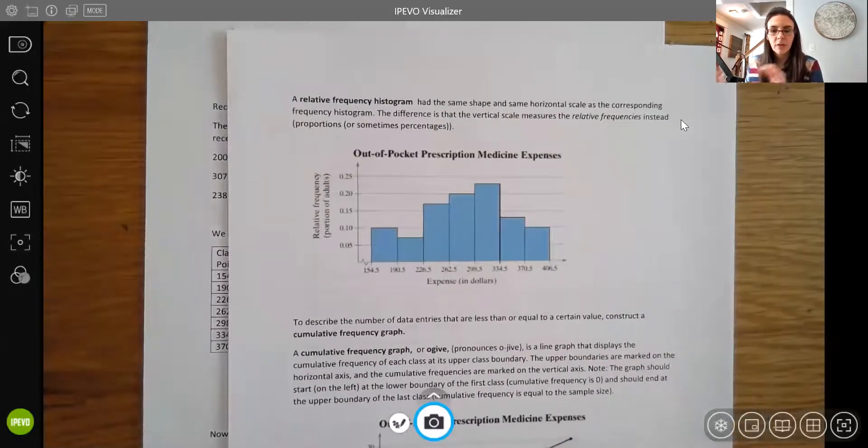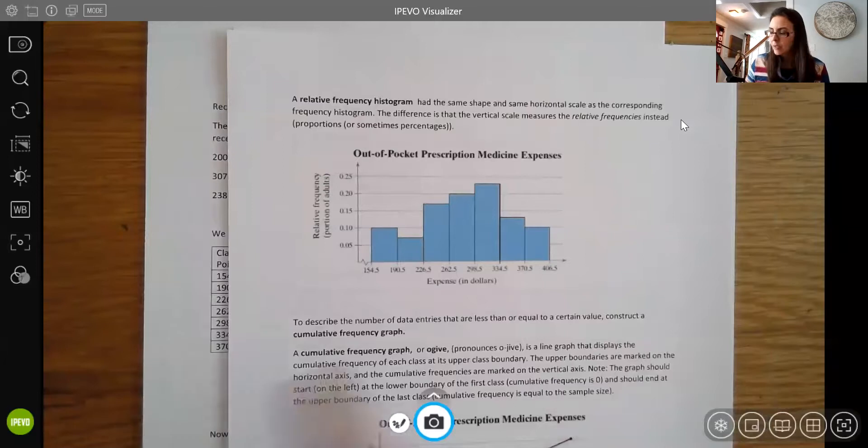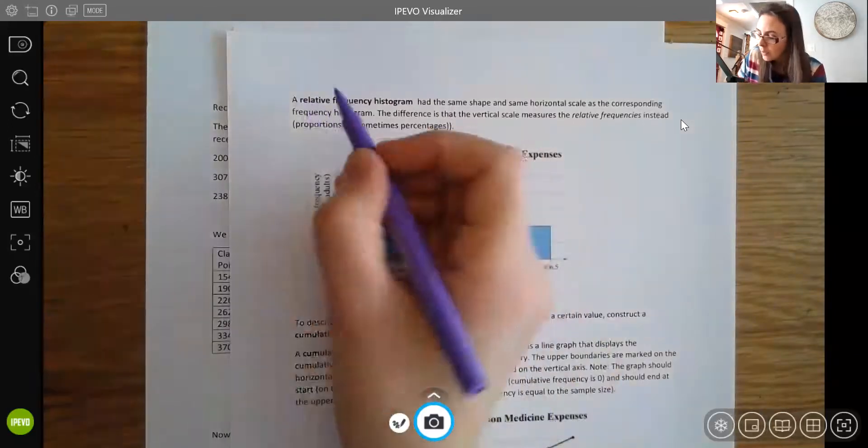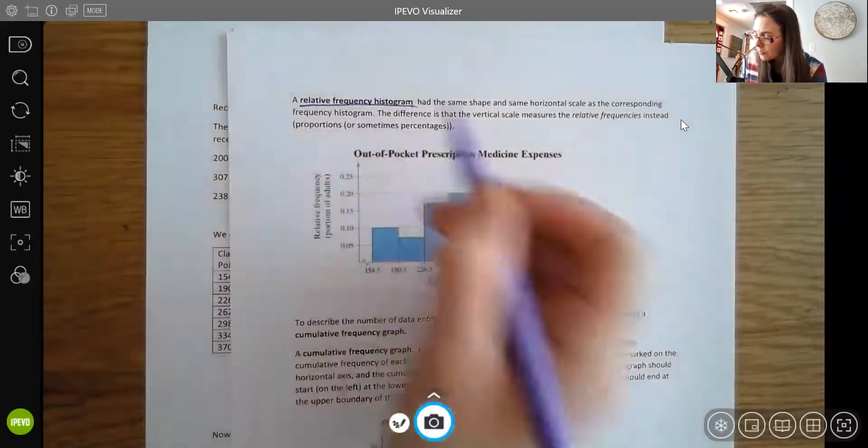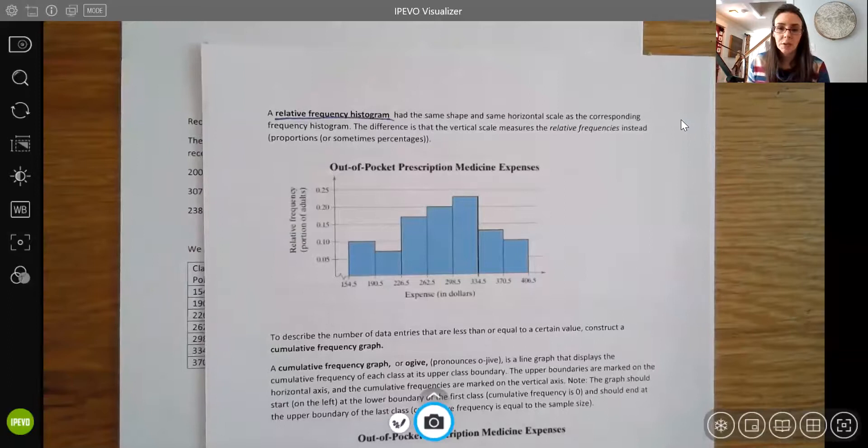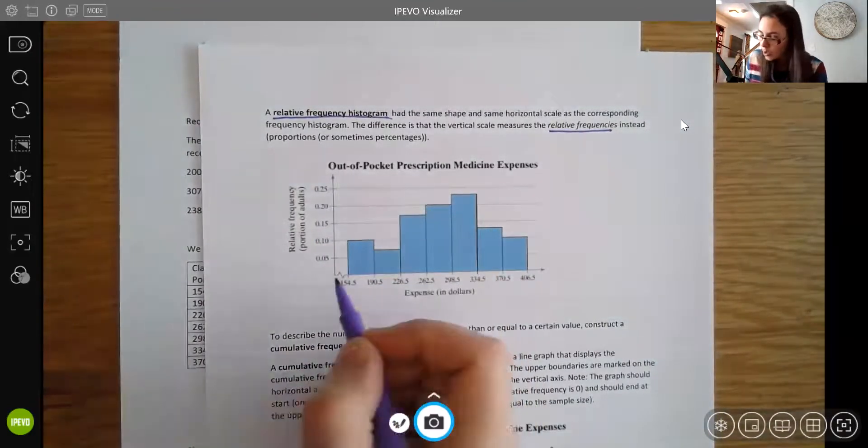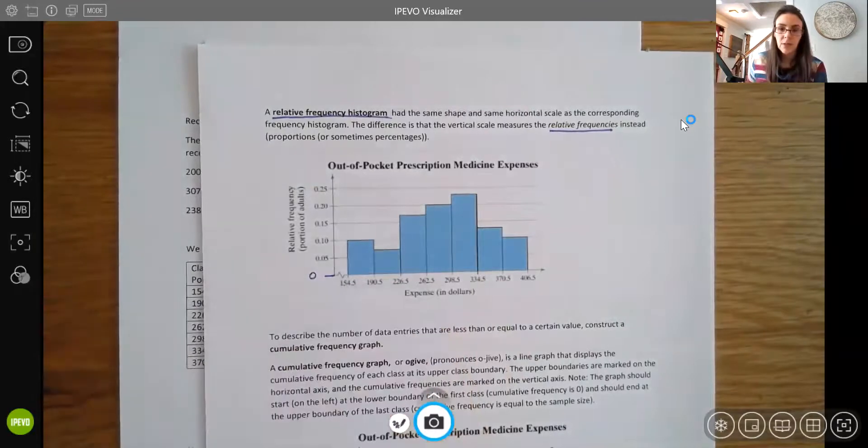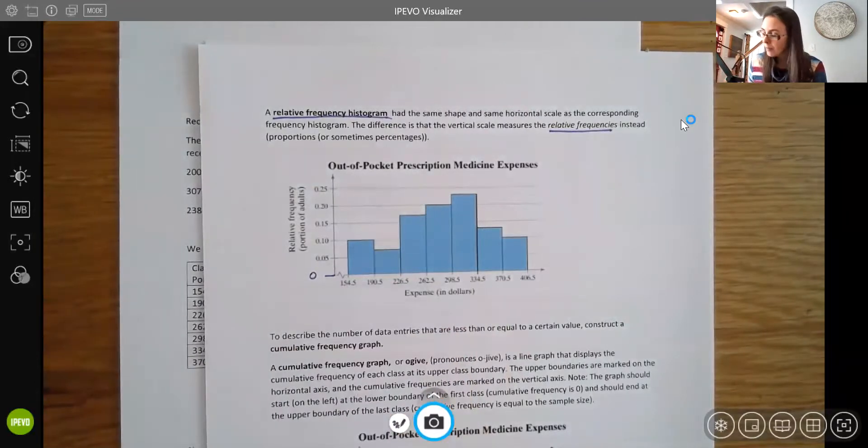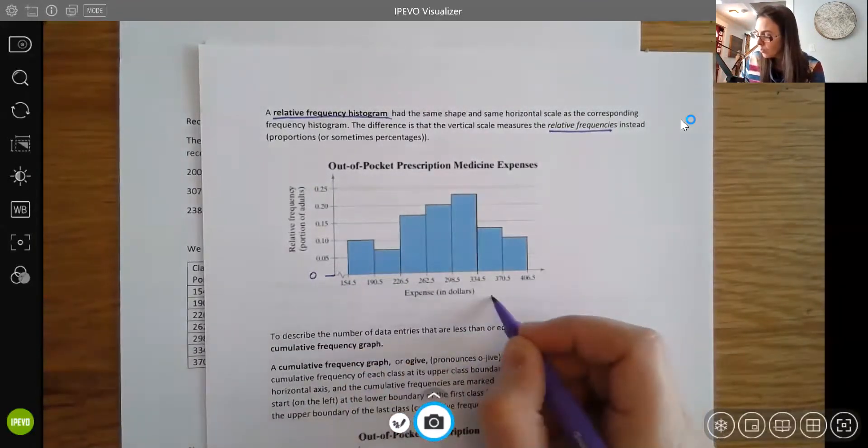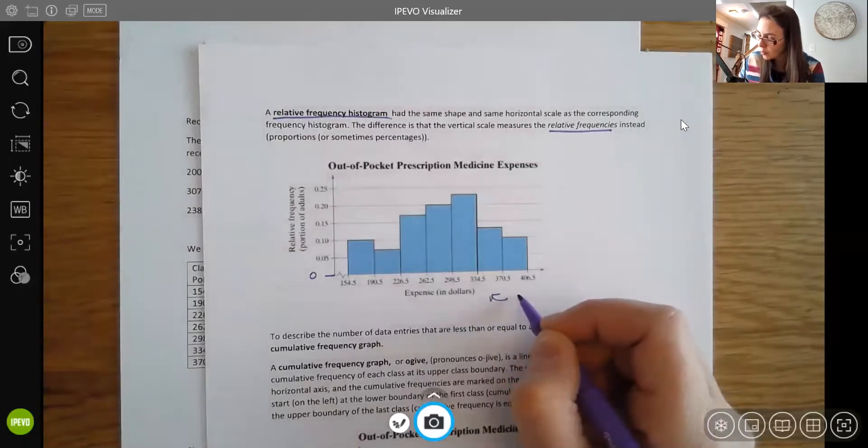So I'm going to continue with using that same data. I'll talk about another type of histogram that we can create, and this one's called a relative frequency histogram. It works the same exact way as your original histogram, but instead of using the actual frequency values, you're going to use the relative frequencies on that y-axis instead. You're still starting at zero, so that's not going to change. And here they're using boundary points.